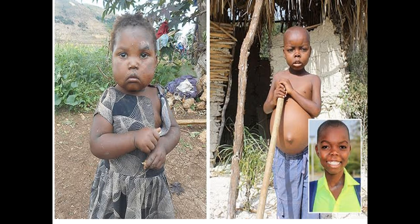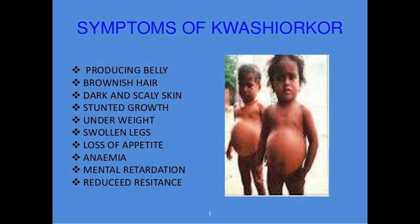This is the picture of Kwashiorkor disease. The symptoms of this disease are: protruding belly, brownish hair, dark and scaly skin, stunted growth, underweight, swollen legs, loss of appetite, anemia, mental retardation, and reduced resistance. These are some symptoms of Kwashiorkor.